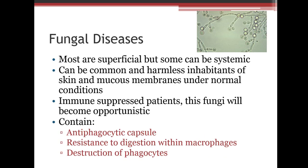Fungal diseases are usually superficial — on the outside of the body — but can also be systemic, meaning they can take over the body. Under normal conditions, fungi can be harmless inhabitants of skin and mucous membranes, but in immunosuppressed patients, fungus becomes opportunistic. Features that make fungus hard to fight include an antiphagocytic capsule, resistance to digestion by macrophages, and being destructive to phagocytes.